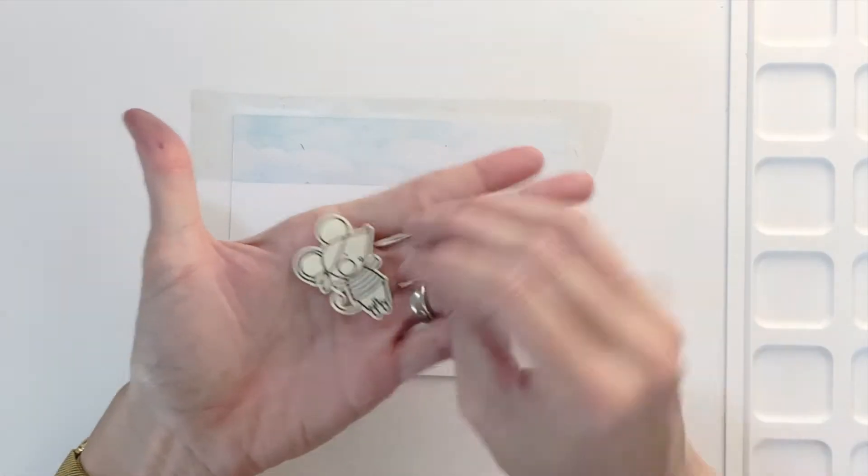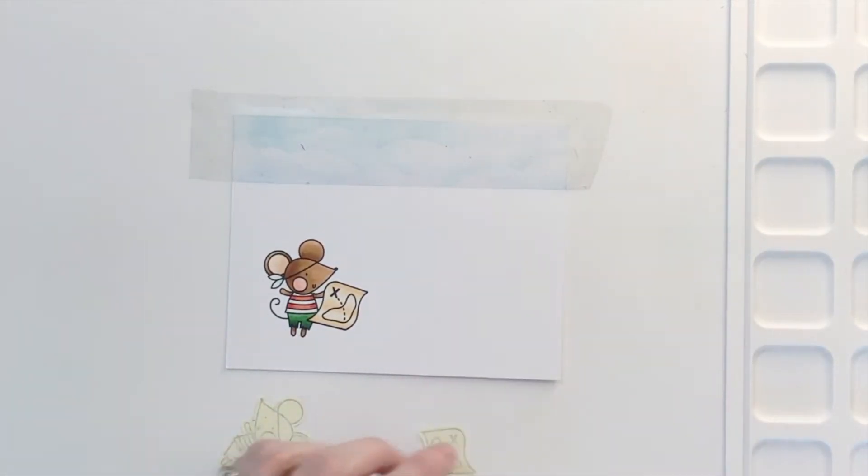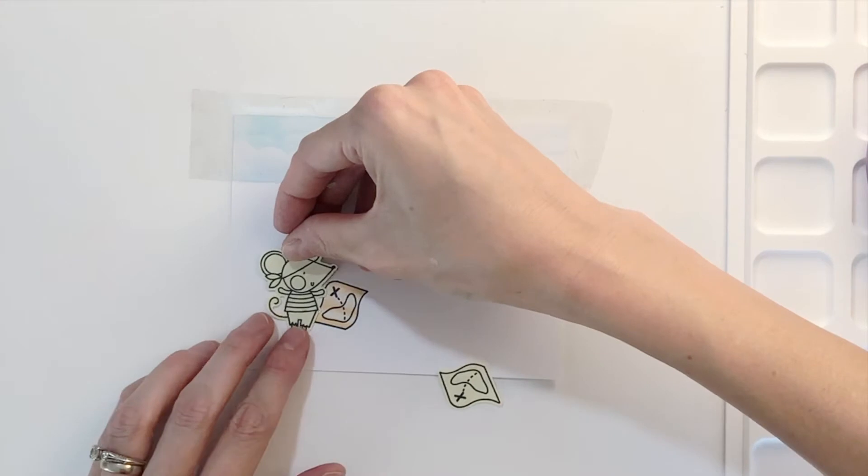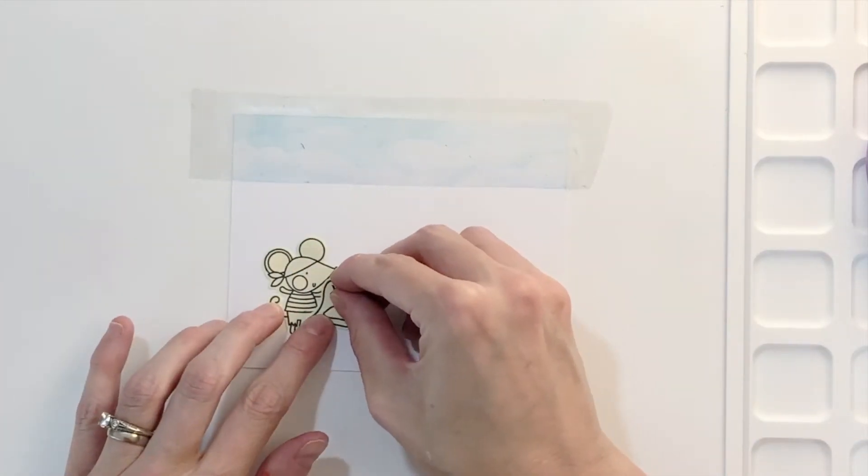Once I've got that done I'll kind of mask it with that same contact paper that I used earlier right along the edge of the skyline. Now I've created some masks out of post-it note for my mouse and my map to protect them.